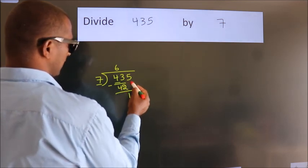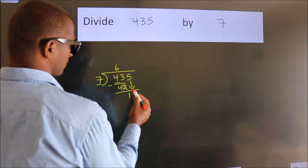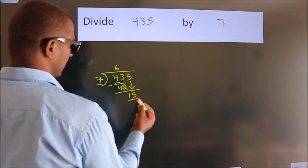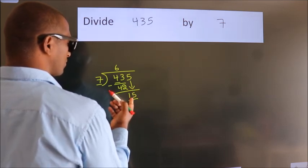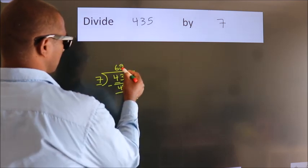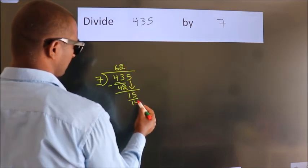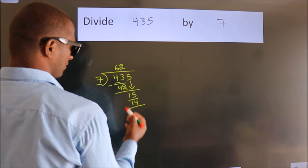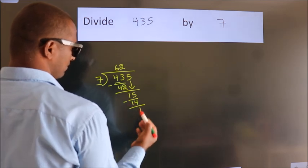After this, bring down the beside number, so 5 down. So 15. A number close to 15 in the 7 table is 7 twos, 14. Now we subtract. We get 1.